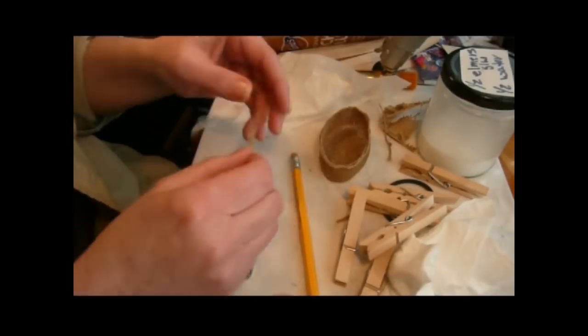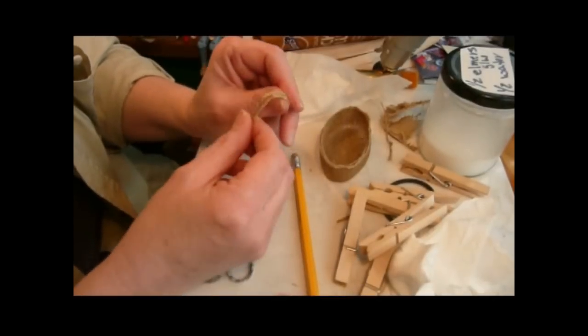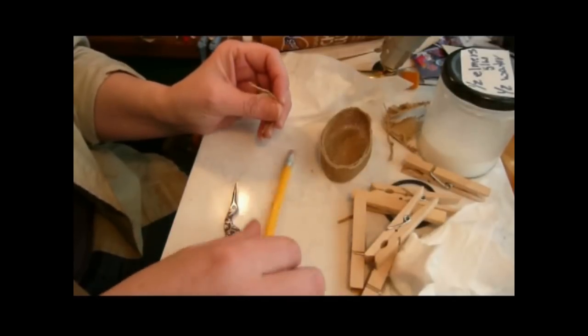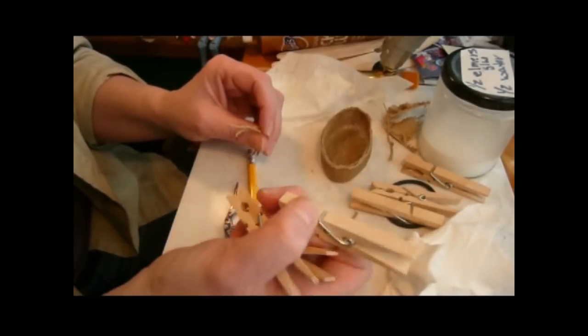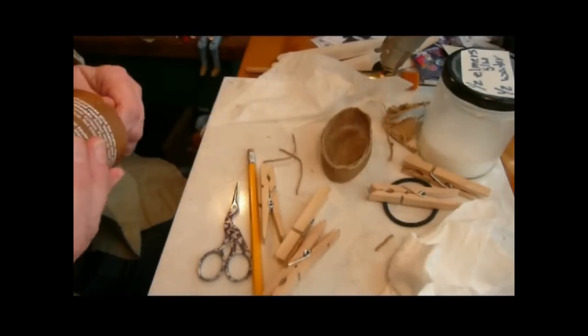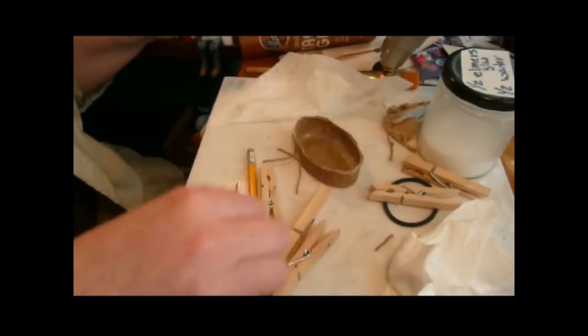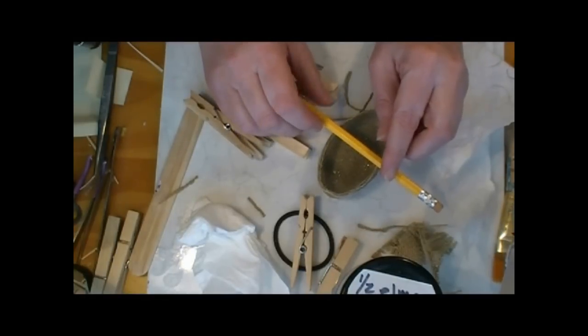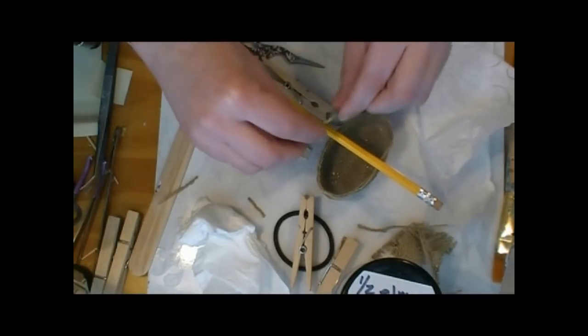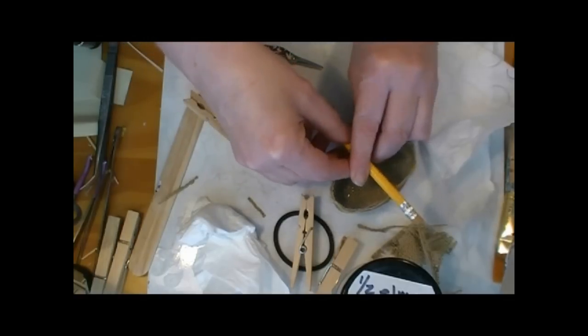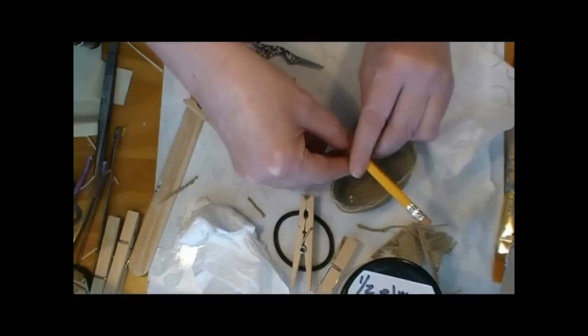Now, for this you'll need, obviously, the rest of your braid. You'll need a pencil and you will need four clothespins and your tacky glue. So what we will do, and I'm going to eyeball about where the center is. I'm going to lay the pencil across. We're just using the pencil so that we get a fairly consistent handle.